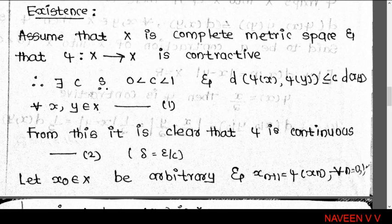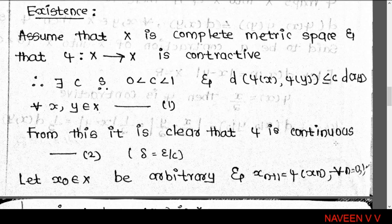There exists c in the open interval (0,1) such that d(φ(x), φ(y)) ≤ c · d(x,y) for all x, y in X. From this it follows that φ is uniformly continuous, and hence continuous.